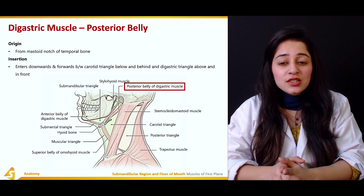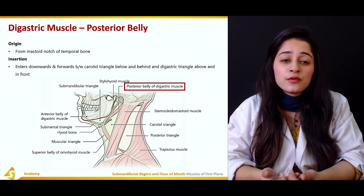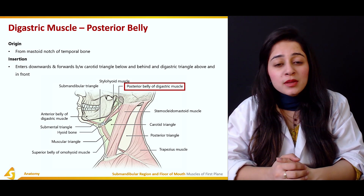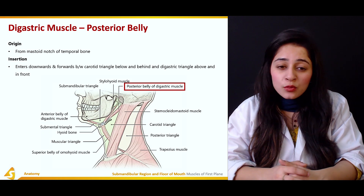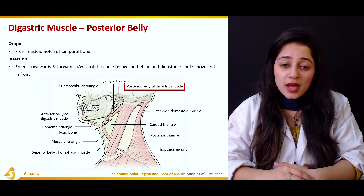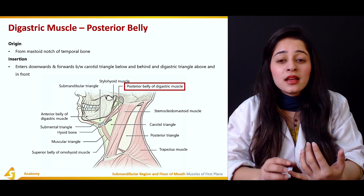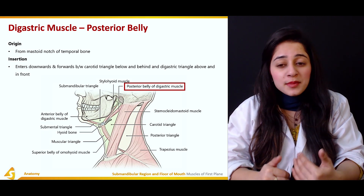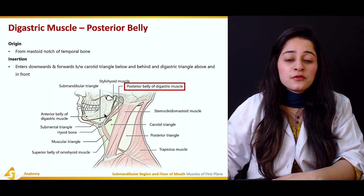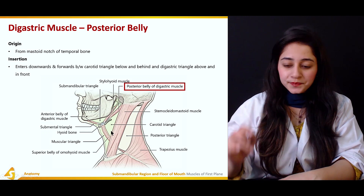The digastric triangle is located above and in front, while the carotid triangle is located below and behind. The posterior belly originates from the mastoid notch of the temporal bone and comes downward and forward in between these two triangles.